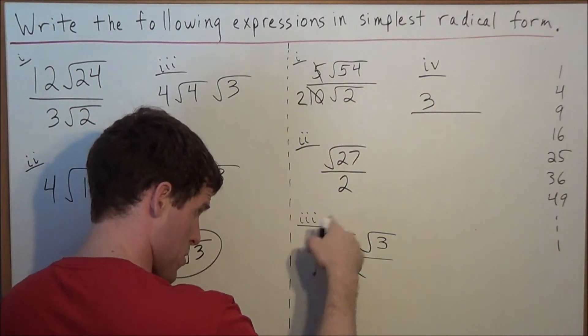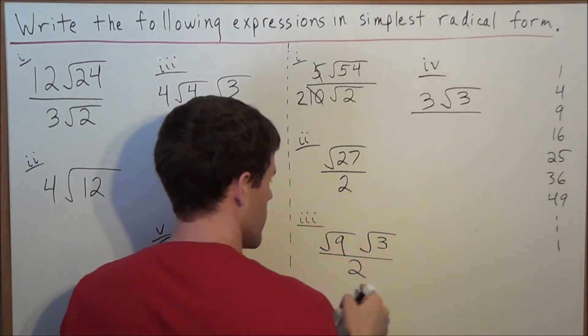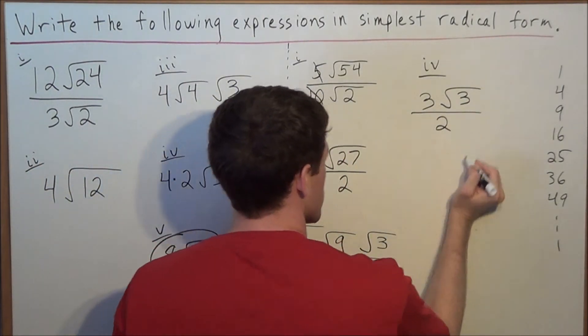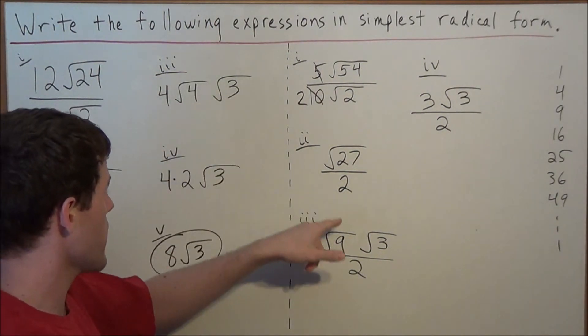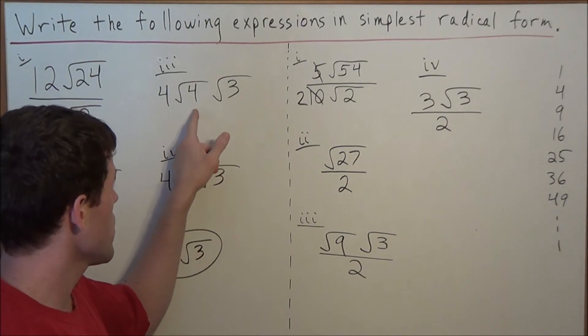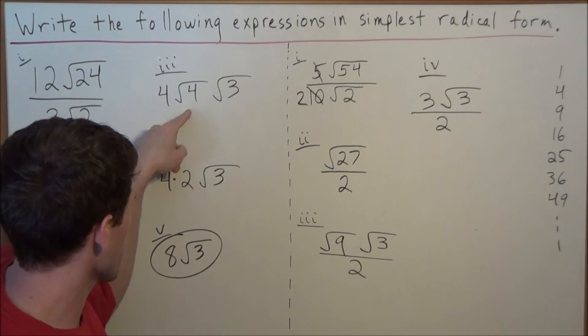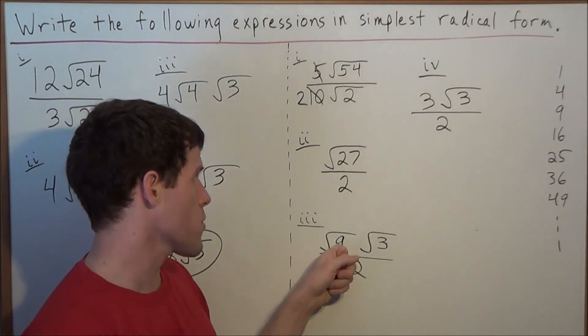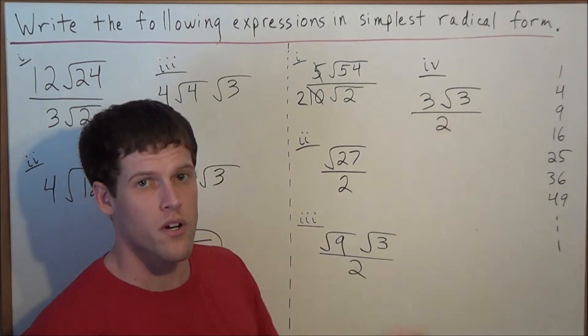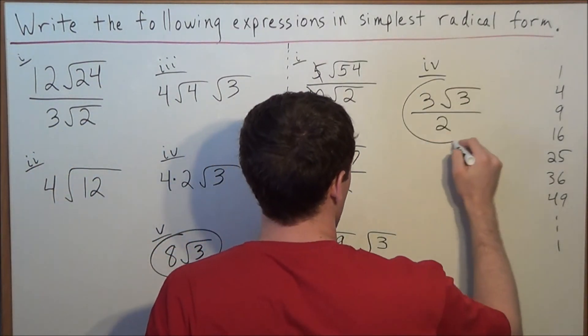So to rewrite this expression here, we have 3 radical 3 divided by 2. Remember, the goal, every time we get a perfect square underneath the radical, we'll get a whole number to pop out. So that's the goal here, that in this case, we had radical 4 and a 2 popped out, since the square root of 4 is 2. And here we had square root of 9, and the result was the whole number 3. And this is going to be in simplest radical form.